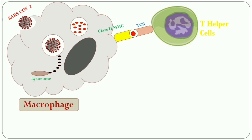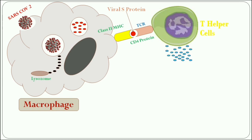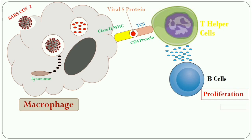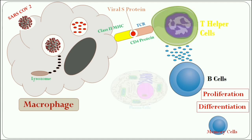This T helper cell has a receptor called TCR, that is T cell receptor, which is specific for the viral antigen — that is the S protein or S antigen of the coronavirus — and a CD4 plus protein which is specific for the MHC II complex. When these two interact perfectly, it will trigger the T helper cell to release a massive amount of cytokines, a specific type of interleukins. These cytokines then alert B lymphocytes and give instruction for proliferation and differentiation. Proliferation means increasing the number of B cells, and the differentiation of B cells results in the formation of memory cells and plasma cells.